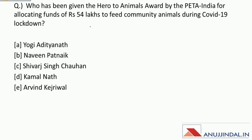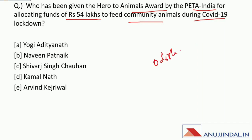Who has been given the Hero to Animals Award by PETA India for allocating funds of Rs. 54 lakhs to feed community animals during the COVID-19 lockdown? He is the Chief Minister of Odisha and his party is Biju Janata Dal. His name is Mr. Naveen Patnaik.